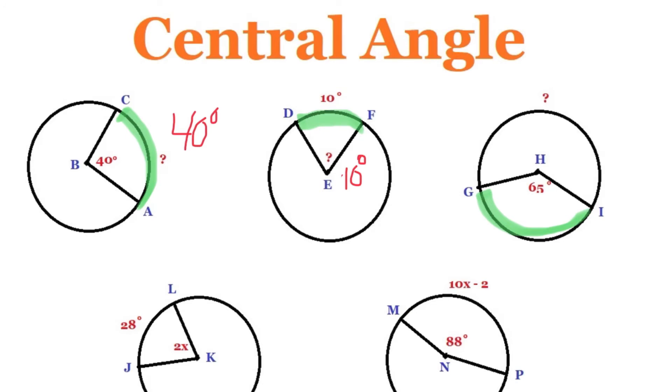So we know that if this is 65 and a circle has 360 degrees, if we subtract 65 from that, the major arc that they're asking us for is 295 degrees.